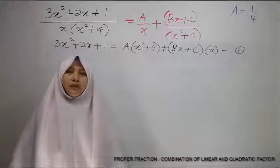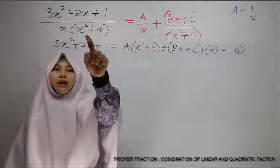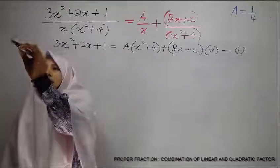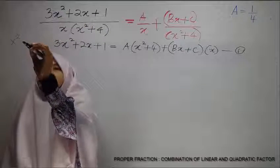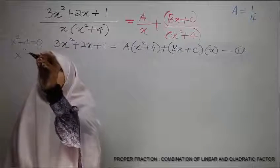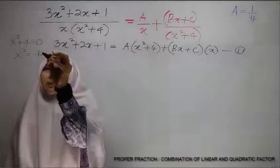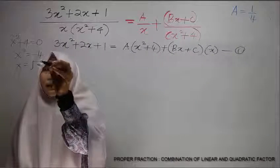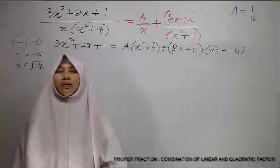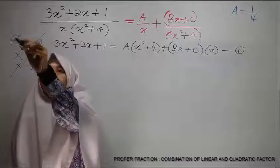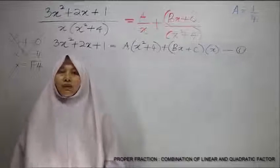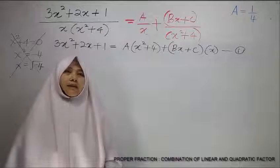For B and C value, we cannot take x squared plus 4 as our x value. I'll show you why. x squared plus 4 is equal to 0, so x squared would be negative 4. So x would be square root negative 4. Now actually, this is a complex number. We cannot take complex number as our x value.